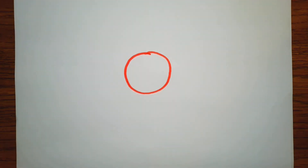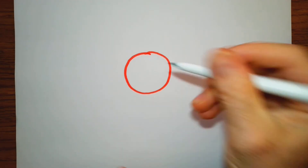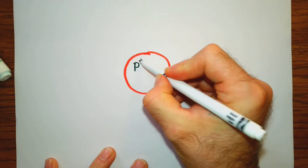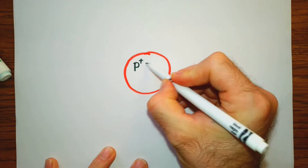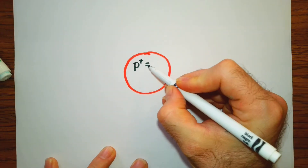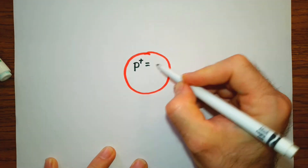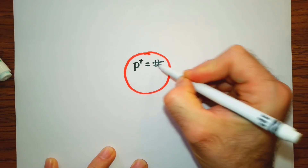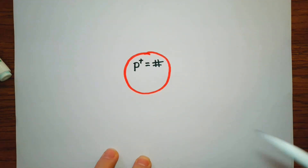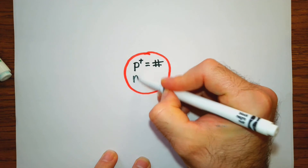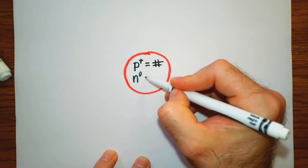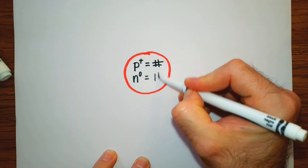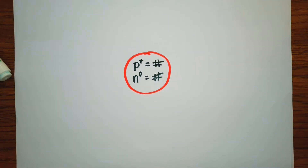This circle represents our nucleus. Inside our nucleus we'll have our protons, so we put P equals a certain number, and our neutrons, where I write N-naught equals a certain number — I'll put a pound sign as a placeholder for those numbers.